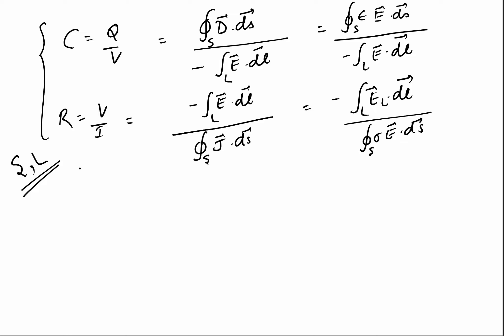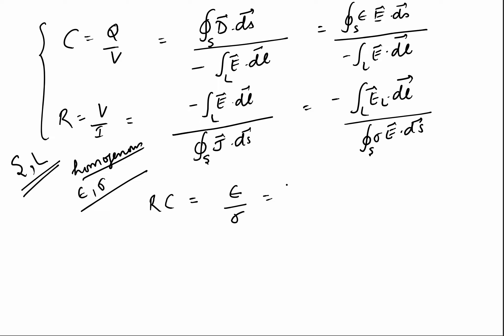assuming either the medium is homogeneous or the space dependence of epsilon and sigma are the same, we can see from these two equations that R·C = epsilon/sigma, which also equals C/G, where G = 1/R.